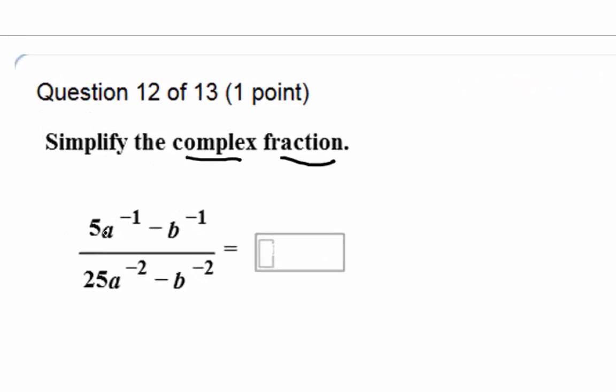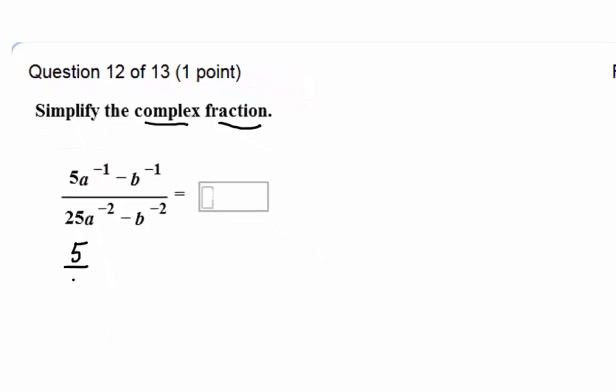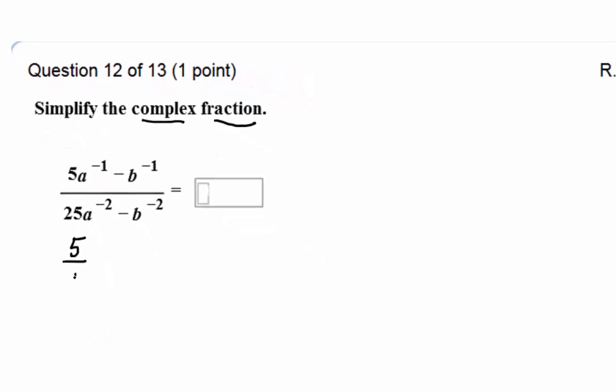That right there might remind you that this a to the negative one is really telling me I have a fraction. So we should have rewritten each of these negative exponents as positive. So we're going to have 5 over a to the first minus 1 over b to the first. We're changing the negative exponent to a positive. And then in the denominator, we have 25 over a squared minus 1 over b squared.